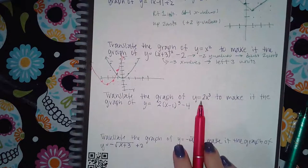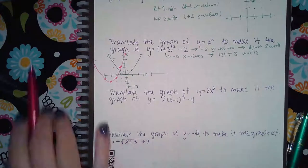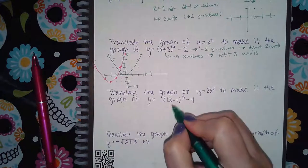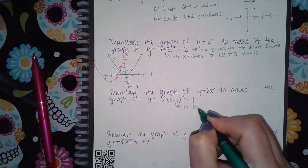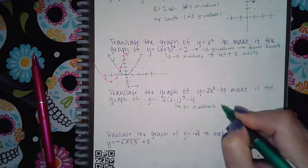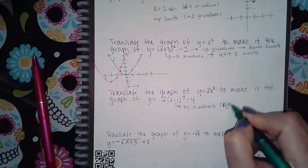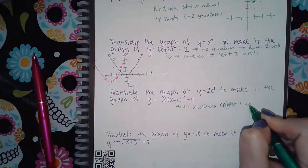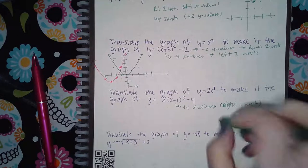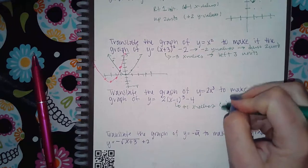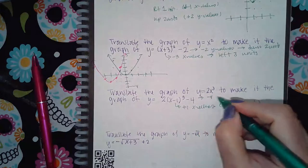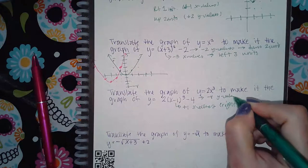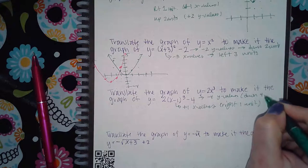Even if it's a cubic function, it's the same idea. On the inside, if it's minus 1, it's going to do the opposite — add 1 to the x values — which essentially moves it to the right 1 unit. And then the minus 4 outside the cube means minus 4 from the y values, which makes it go down 4 units.